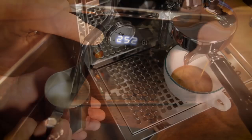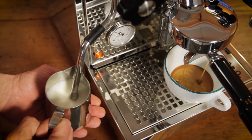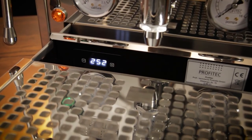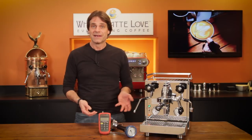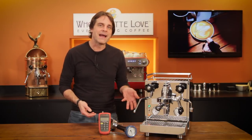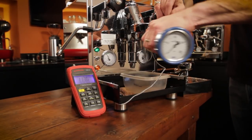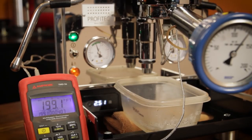Profitec's Pro 500 has been one of our top selling heat exchange boiler machines for a few years. What's new for the 500 is that PID, but you can't just slap a PID on a heat exchange machine and hope for the best. In a minute I'll have results of brew temperature testing done using a SCASE device that shows just how successful Profitec has been implementing PID control on their Pro 500.